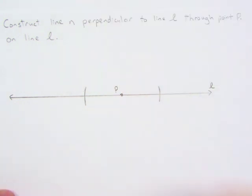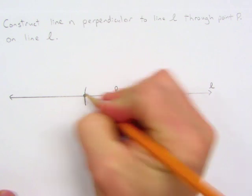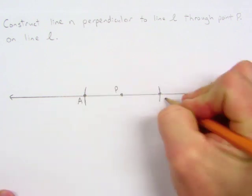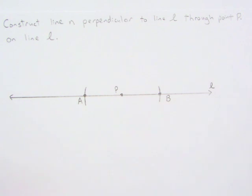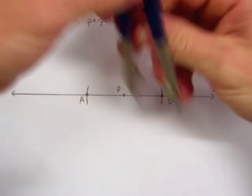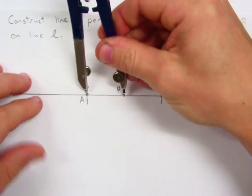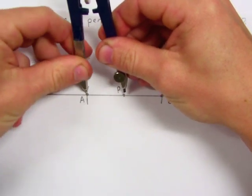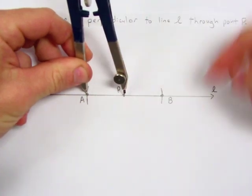Let's go ahead and label the intersection points here A and B. Our next step is to place our compass point on A and we need to open the compass up so that it goes past point P.